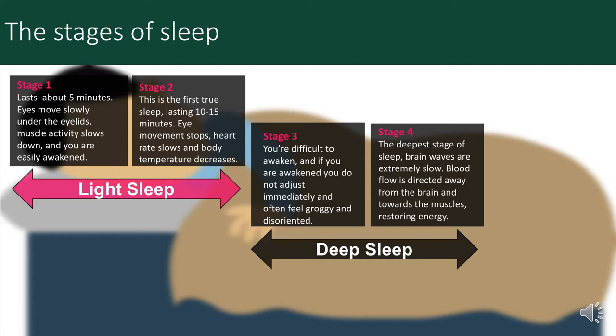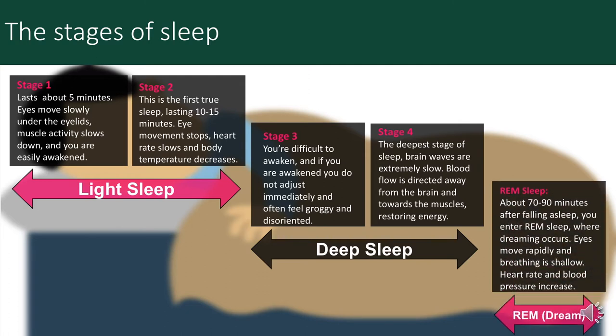One of the most fascinating stages of sleep we've only just started to understand is REM sleep, or rapid eye movement sleep. During this stage your breathing becomes faster and irregular, and your heart rate and blood pressure increase to near waking levels. Most of your dreaming occurs during REM sleep, although some can also occur in non-REM sleep. Your arm and leg muscles actually become temporarily paralysed to prevent you from acting out your dreams.